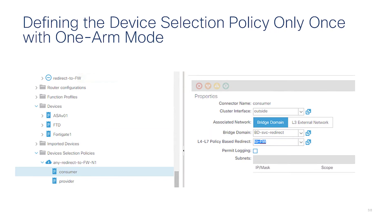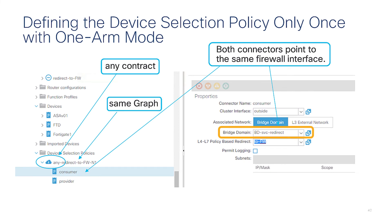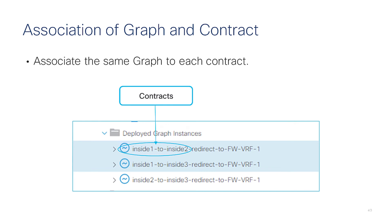You would not even need to apply the graph template to every EPG pair. You could just specify 'any' in the device selection policy to match any contract, then specify the graph name — the one defined with the redirect to the firewall. Here you specify the cluster interface, which is outside/inside in the previous example, and then the same service bridge domain and the same redirect policy.